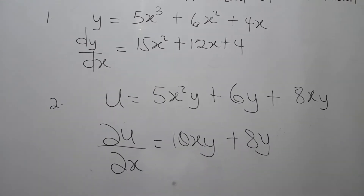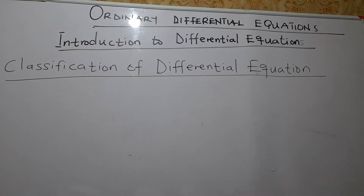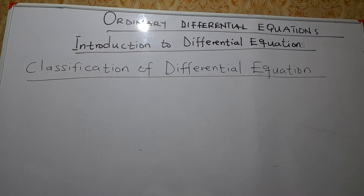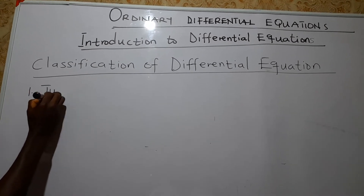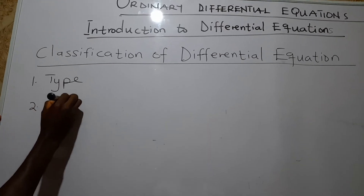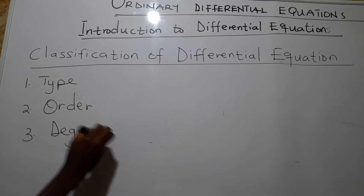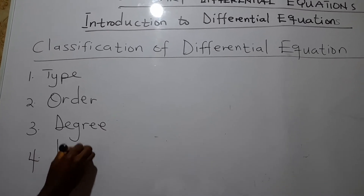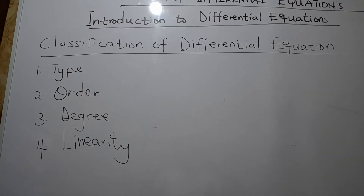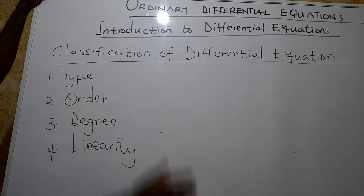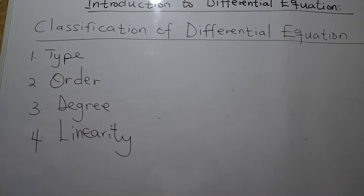This leads us to how differential equations are classified. Differential equations are classified by: one, type; two, order; three, degree; and four, linearity. So we classify by type, by the order a differential equation has, by degree, and we can determine whether a differential equation is linear or non-linear — that's what we refer to as linearity. Now we take them one by one.